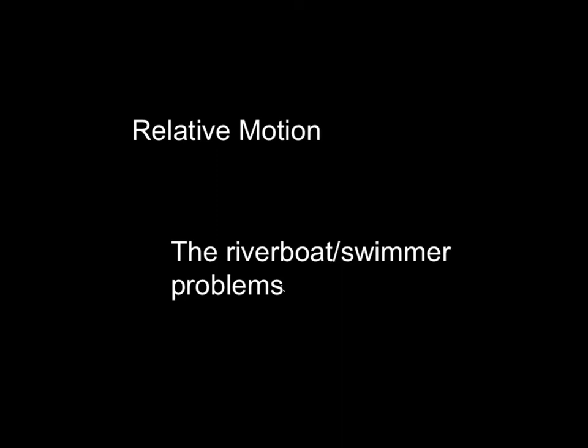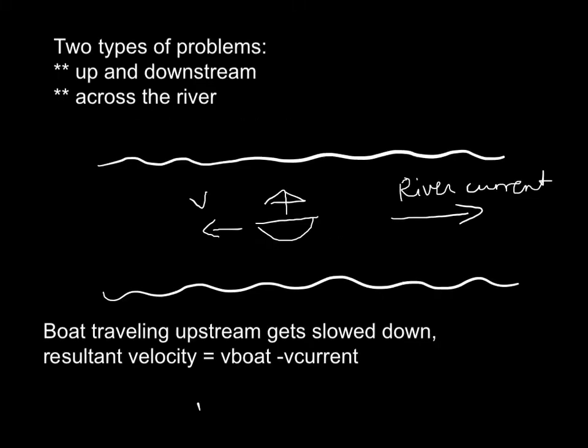These are special types of problems on relative motion with riverboats and swimmers. We're talking about a current here. So there's two basic types of problems. One is when the motion's in the same direction, when we're going up and downstream.